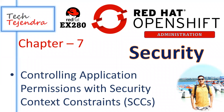Hello everyone, welcome to my channel Tech Tejendra. We are now at Chapter 7 of the Red Hat OpenShift administration tutorial. In this chapter, we will continue to understand security — how we can apply security at the cluster level as well as in our applications. We will discuss and understand security context constraints, also known as SCC. This is a very important concept if you want to learn about OpenShift, and also if you want to go for the EX280 exam.